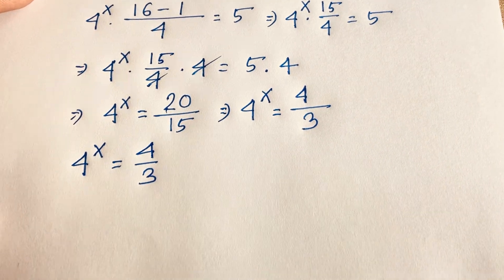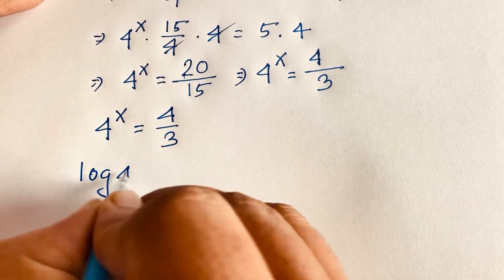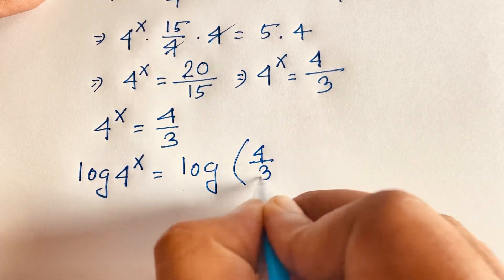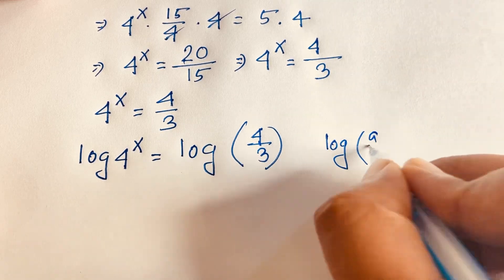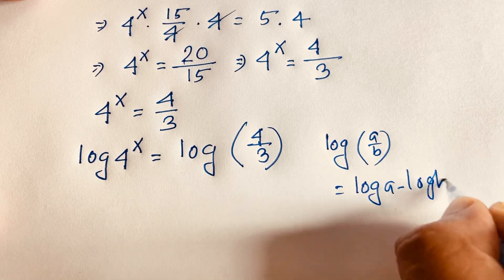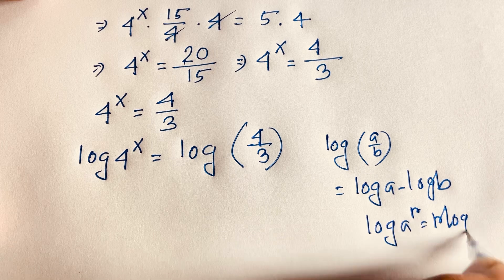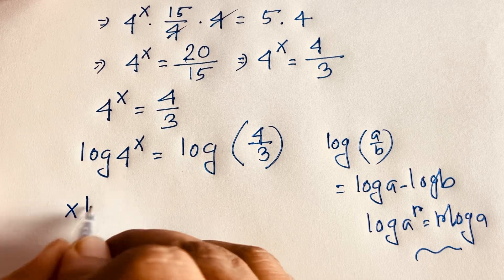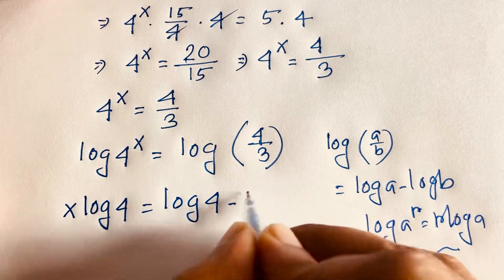Now I apply log to both sides. So log of 4 to the power x equals log of 4 over 3. We know the logarithm rule: log(a/b) equals log a minus log b. And we know that log of a to the power r equals r times log a. According to this law, I can move the x in front. So x times log 4 equals log 4 minus log 3.